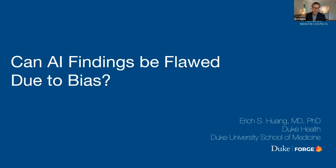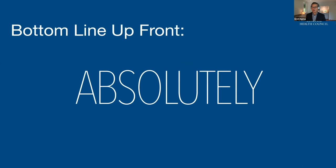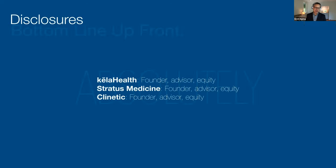Thank you, Barry, and thank you to the National Health Council for the opportunity to talk about this really important and very topical subject. I was asked to talk about whether artificial intelligence findings can be flawed due to bias. And I will tell you, bottom line up front: absolutely. So we can end the talk now. No, I'm joking. What I want to do is give you all some tools to think about this as an issue. The answer is absolutely, but I want to explain a little bit why that's the case.